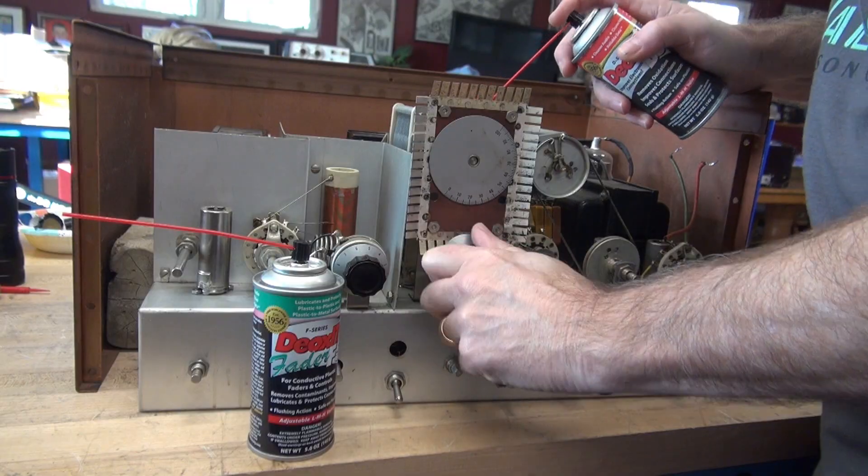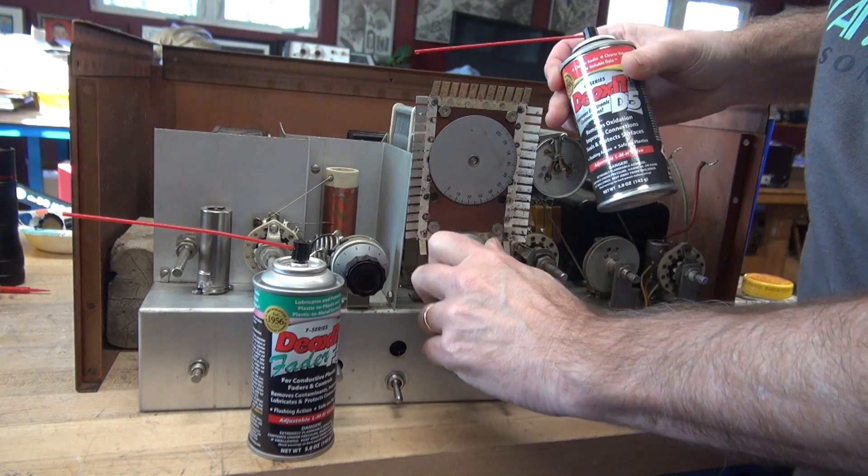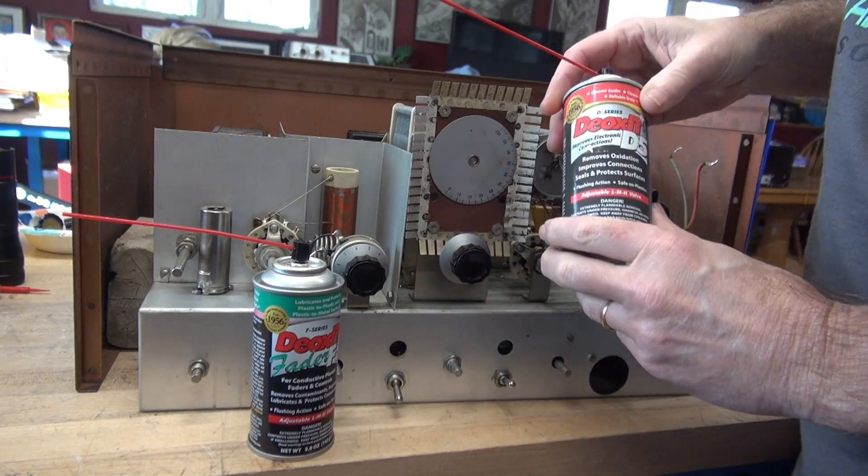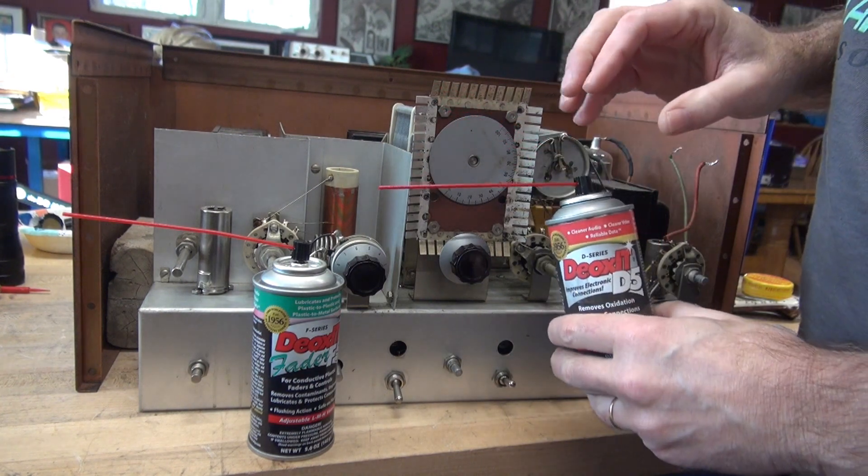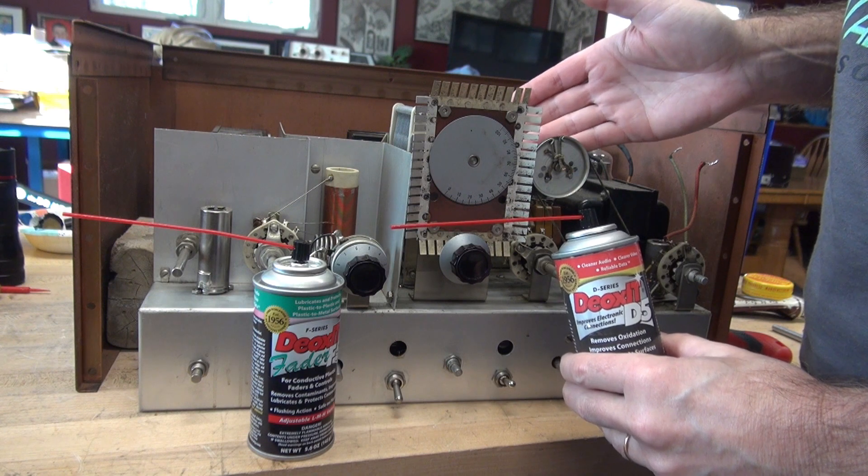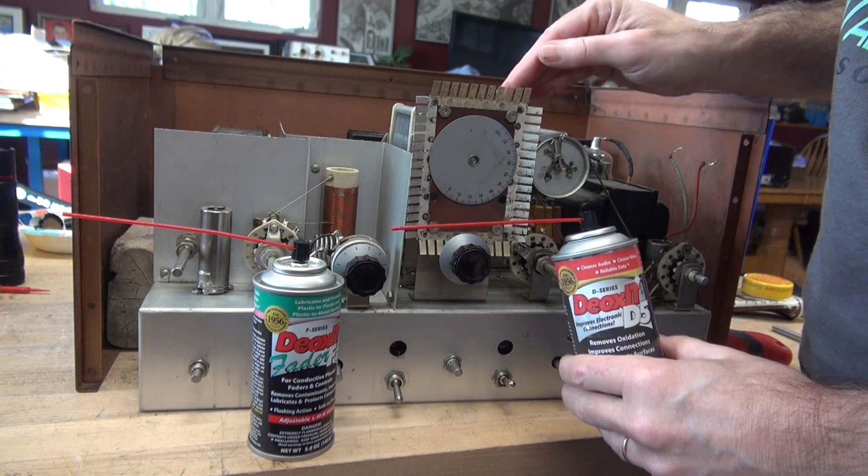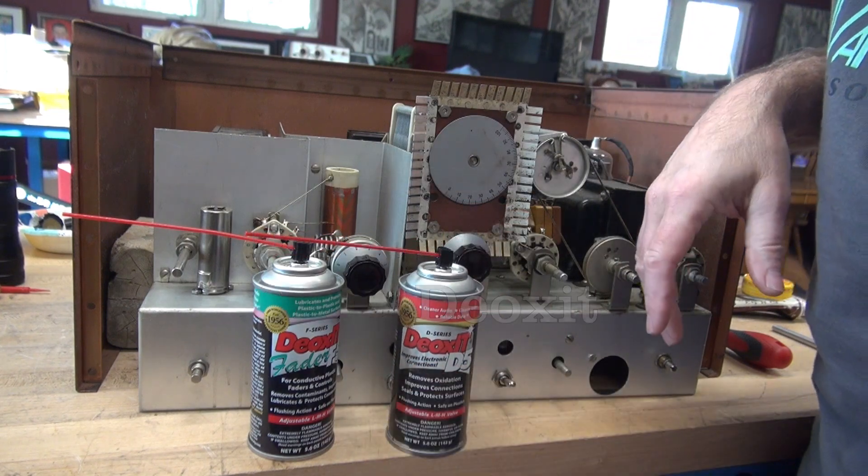So over the years, I have used many contact cleaners on vintage electronics, but I find that nothing beats the quality of the Deoxid line. I also use the D5 on wiper arms of tuning caps and the surface of the roller inductor coils. It does a great job.